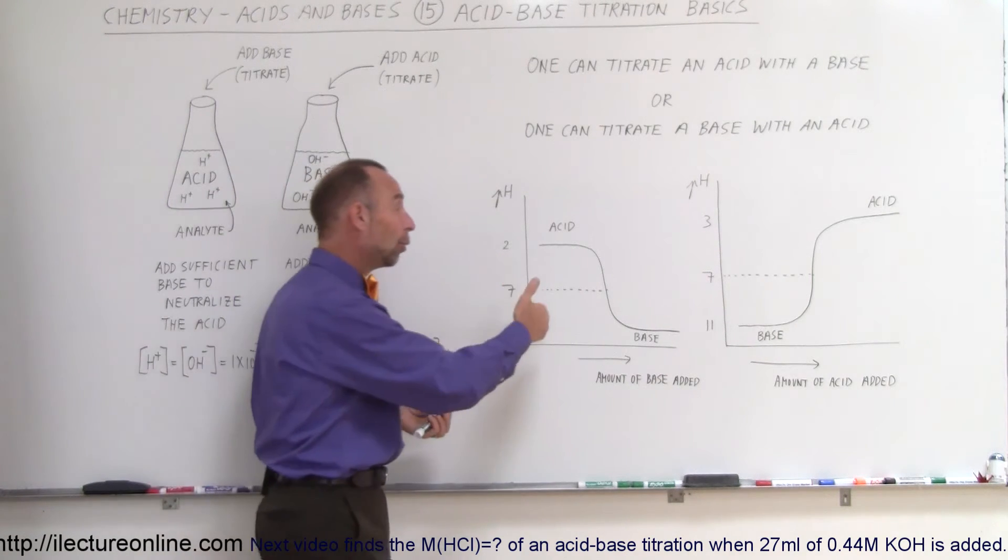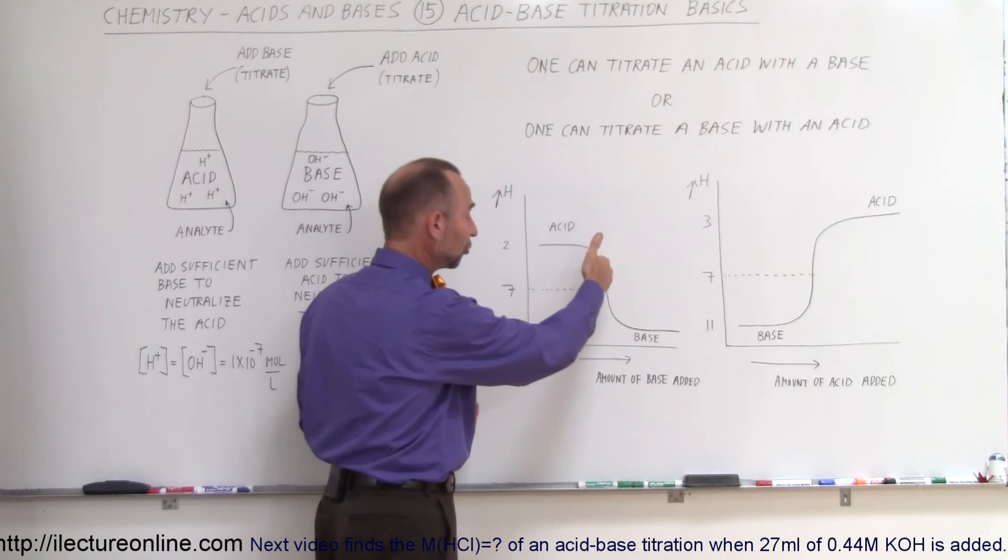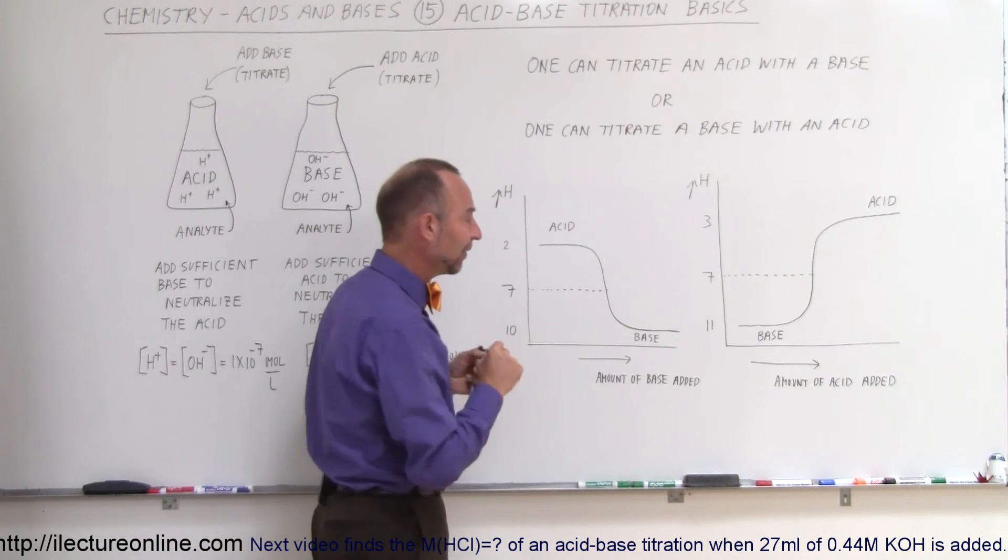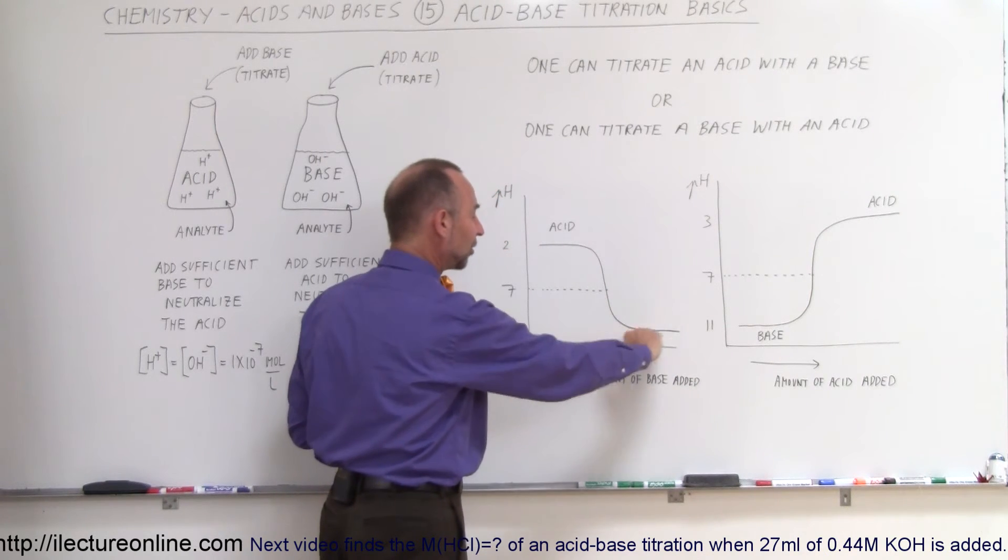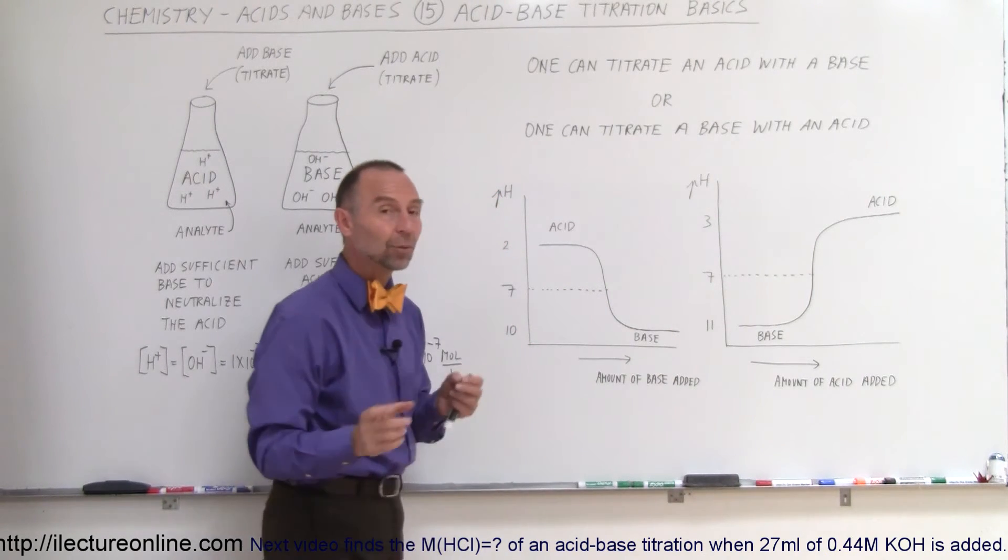If you continue to add more base to the acid, the solution becomes more basic. There will be more hydroxide ions instead of hydrogen ions. The eventual pH will settle to what the concentration of the base was that you were adding.